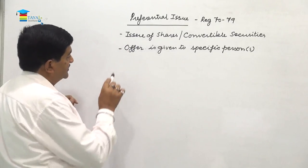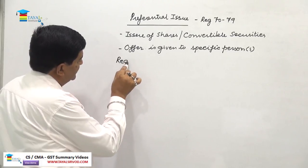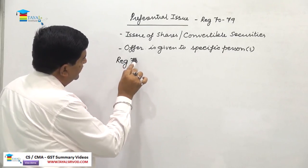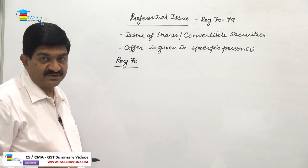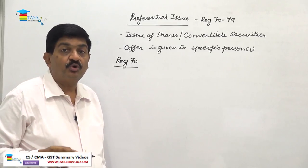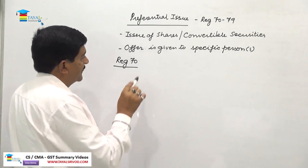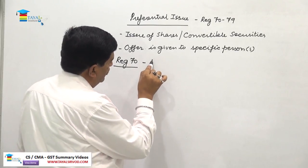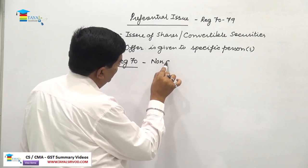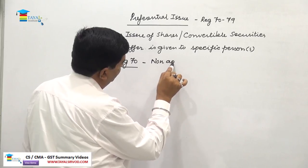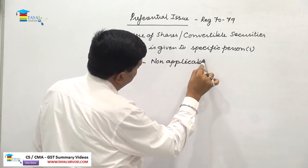Regulation number 70 says that the provisions we are going to discuss do not apply in certain cases — that is, there is a non-applicability of the preferential issue provisions in specific situations.